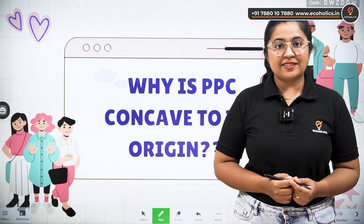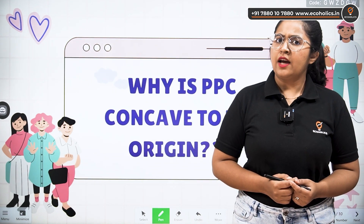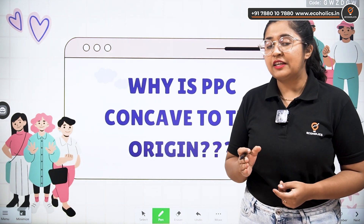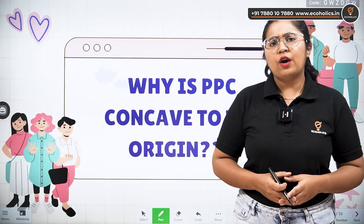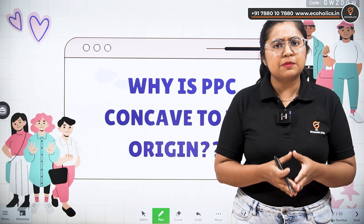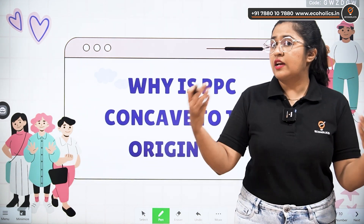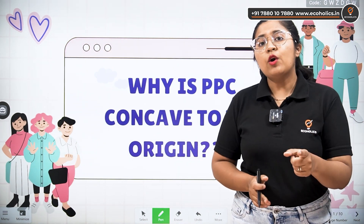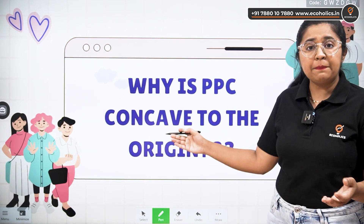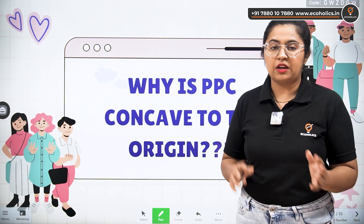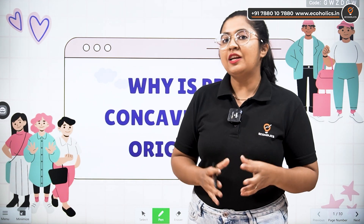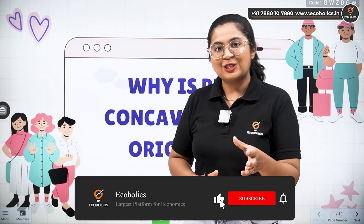Hello and welcome to Ecoholics. Today we are going to understand another concept related to microeconomics — this concept is related to PPC, which is the Production Possibility Curve. We have learned in our previous lectures about what exactly is the production possibility frontier and how the transformation curve is made. Today we want to understand one basic principle: why is the PPC concave to the origin.